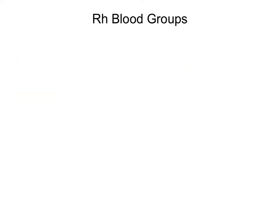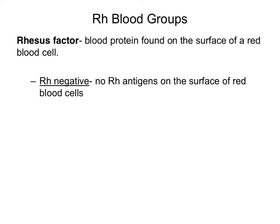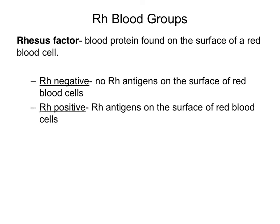The last blood group we are going to discuss is the RH blood group. RH refers to the rhesus factor, which is a blood protein found on the surface of a red blood cell. A person who is RH negative means that they have no RH antigen on the surface of their red blood cells. In contrast, a person who is RH positive has RH antigens on the surface of their red blood cells. So when you hear of a person who has a blood type that is A positive, that person has the A antigens along with the RH antigens on the surface of its red blood cells, whereas a person with blood type A negative has A antigens but does not have the RH antigens on the surface of its red blood cells.